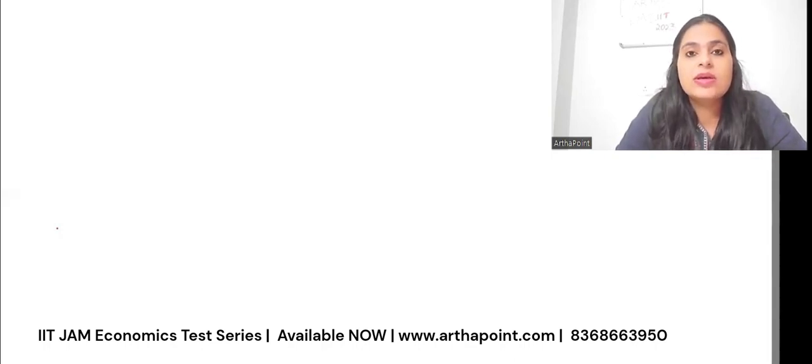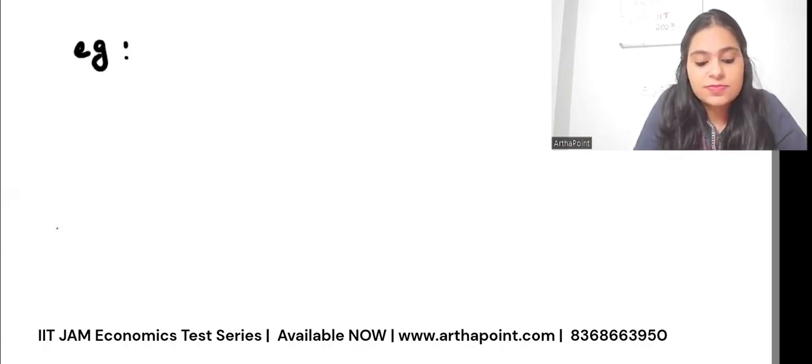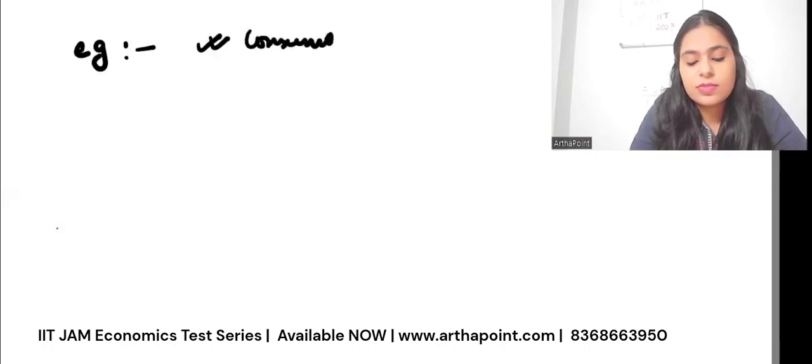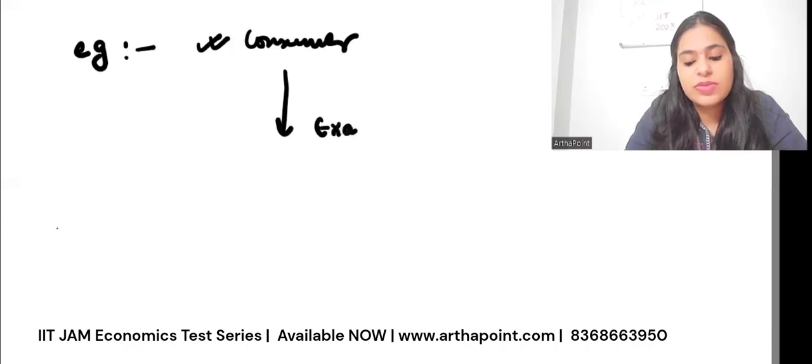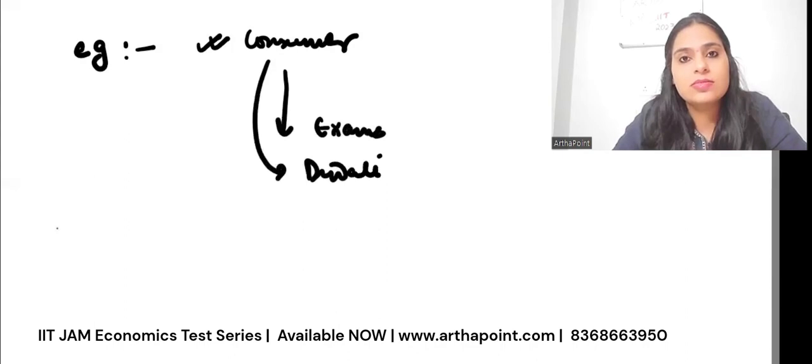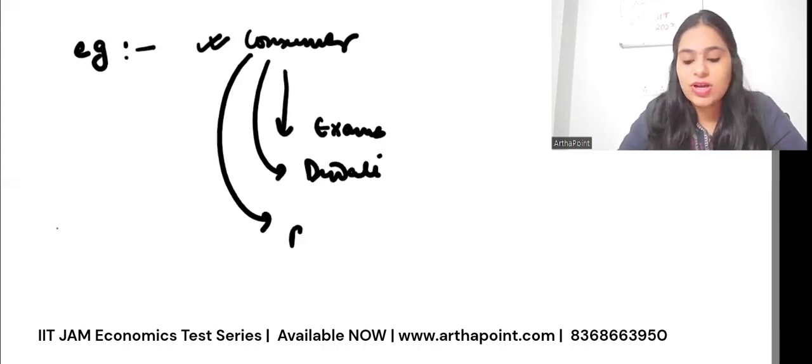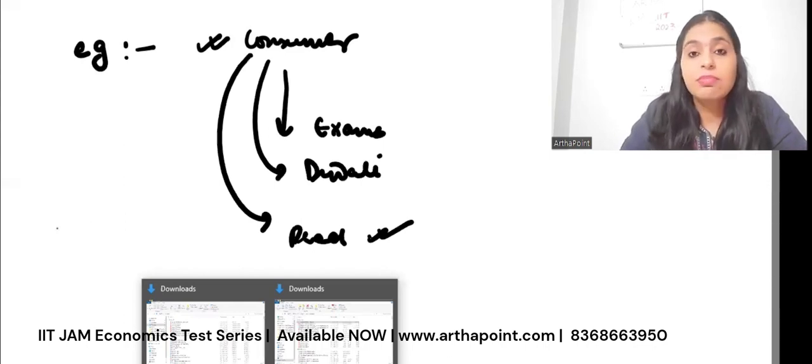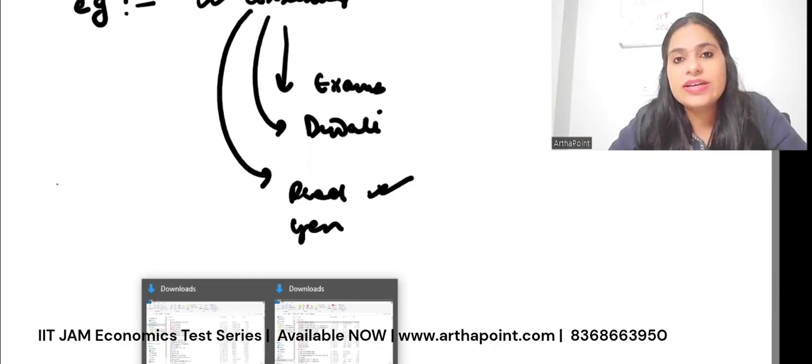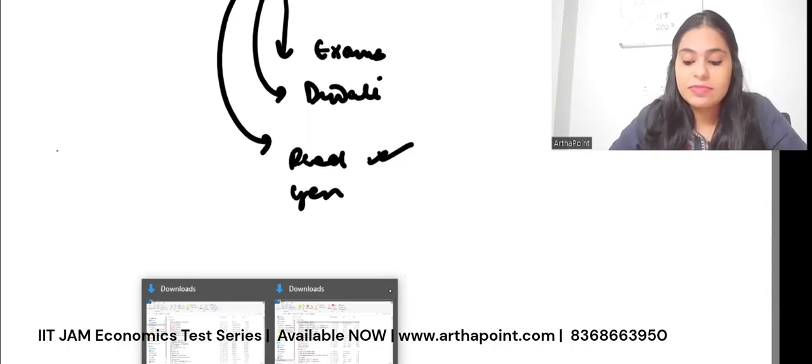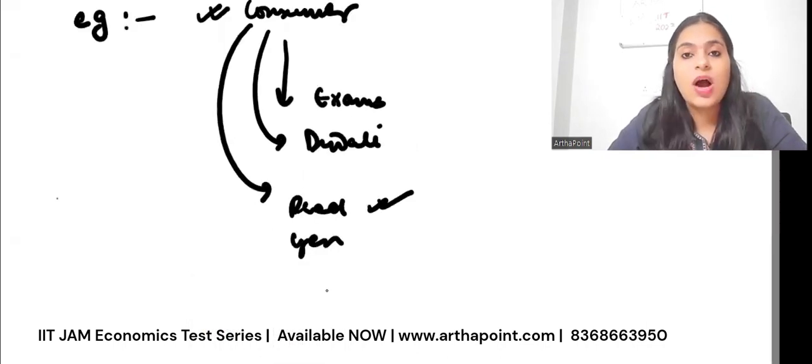Aisa toh hai nahi kuch bhi nahi pada, aur aisa bhi nahi hai ki sab kuch pad liya. How do I deal in these situations? My suggestion would be, do only those parts which you haven't touched for now. Revision may do everything together, but if you haven't touched a part and you think that is important from entrance exam point, you just do that. For example, I know many students who were with me when consumer theory was going on, but then they had their exams, bich mein koi midterm exams aagay. Then they had Diwali break, Shaira break, Durga Puja break. They stopped studying then. And when they joined back in the live lectures, they saw that producer is already done, that we are in the middle of general equilibrium.